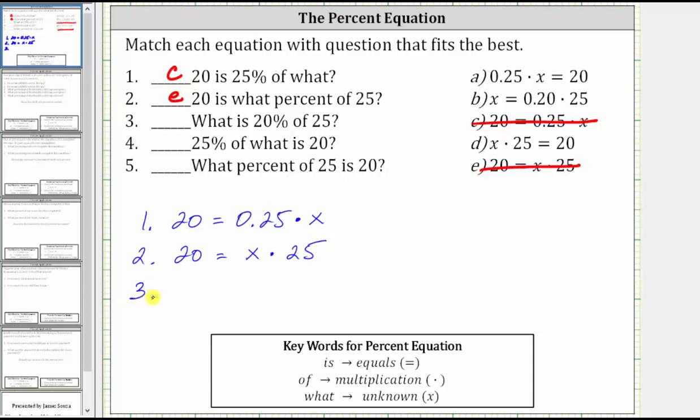For number three, we have 'what is 20% of 25?' The first word is what, which represents the unknown, and therefore we use a variable. Let's use x. Is means equals. 20% as a decimal is 0.20, which is equivalent to 0.2 if we want. And then we have 'of 25', giving us times 25. So the percent equation for 'what is 20% of 25' is x equals 0.20 times 25, which looking at our choices is B.